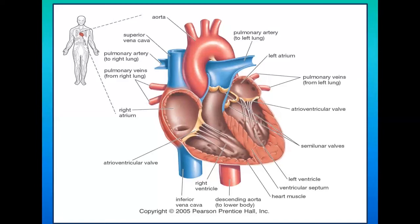To sum up the flow of blood in the human heart: deoxygenated blood from the upper and lower body enters the right atrium via the superior and inferior vena cava, moves to the right ventricle, and is pumped to the lungs via the pulmonary artery. After becoming oxygenated in the lungs, blood returns via the pulmonary veins to the left atrium, moves to the left ventricle, and is pumped to the rest of the body through the aorta and descending aorta.